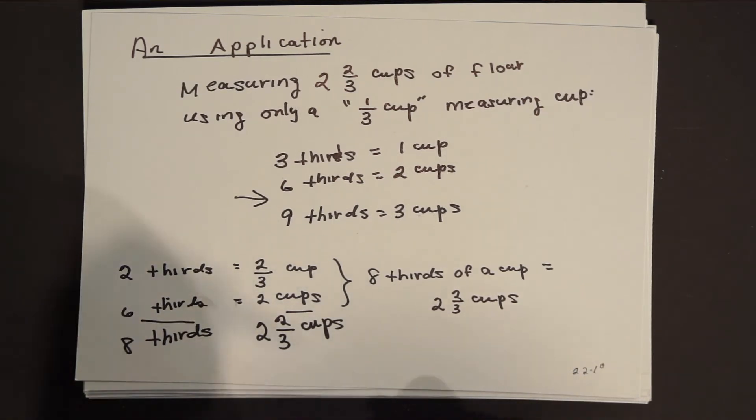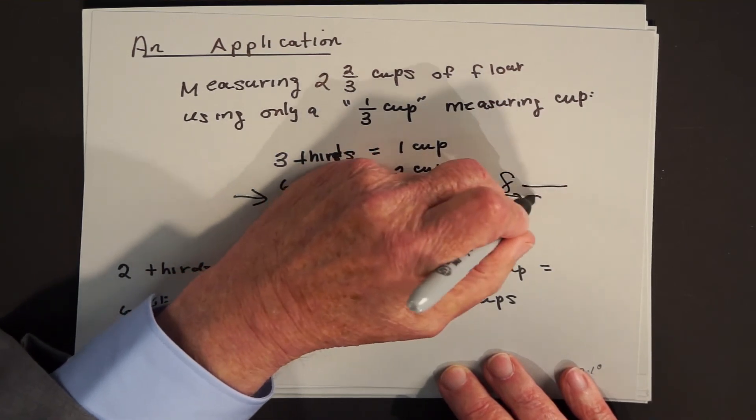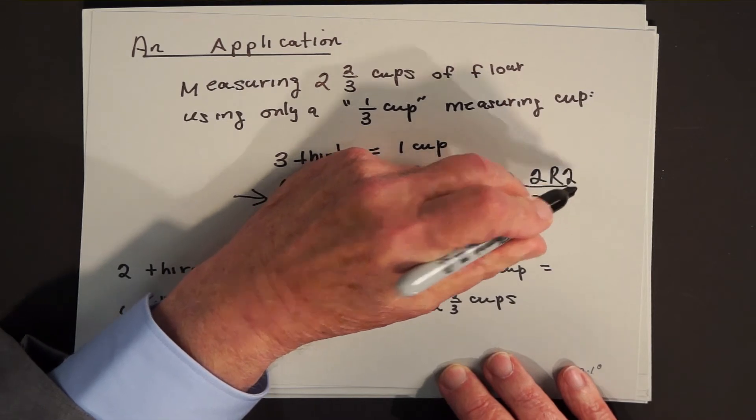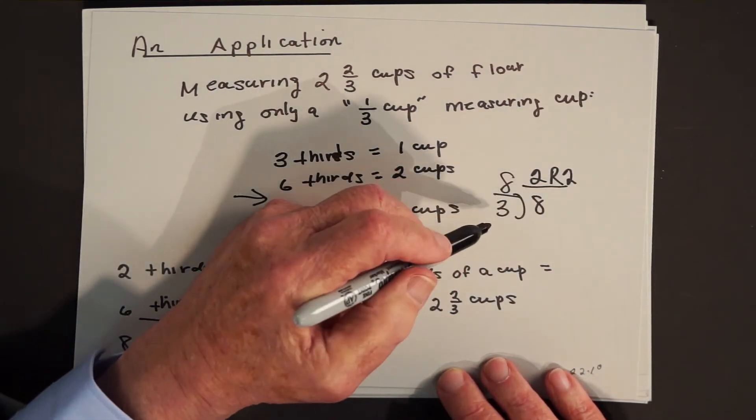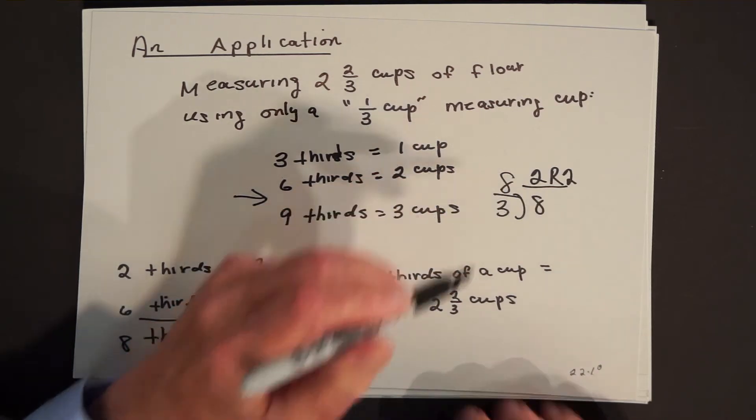And if you actually did the long division, short division, eight divided by three, what would you get? Two with a remainder of two. Two cups and two thirds is what eight thirds of a cup would be. And I think that about brings us to a good place to end today's lesson.